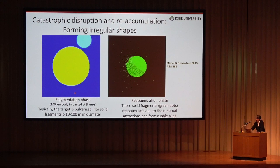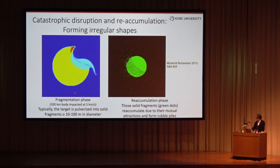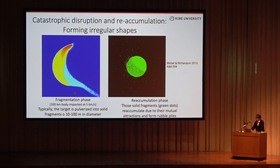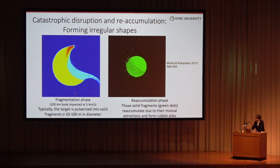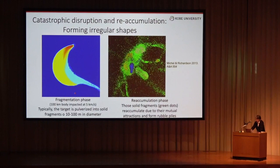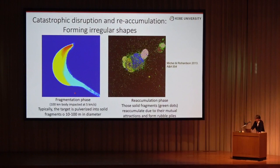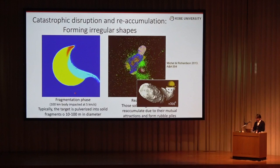Here is an example of numerical simulation for catastrophic disruption and reaccumulation. This simulation shows the formation of an irregular-shaped small body due to reaccumulation. The simulation was conducted separately for fragmentation phase and reaccumulation phase. This animation shows the fragmentation phase for a 100-kilometer body impacted at 5 kilometers per second — the target is pulverized into solid fragments of 10 to 100 meters in diameter. The reaccumulation phase shows those solid fragments reaccumulating due to mutual attraction to form a rubble pile. The final reaccumulated body in this case resembles asteroid Itokawa.